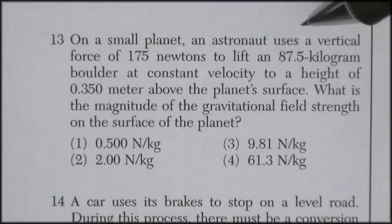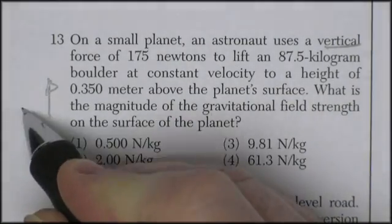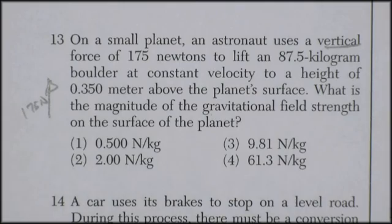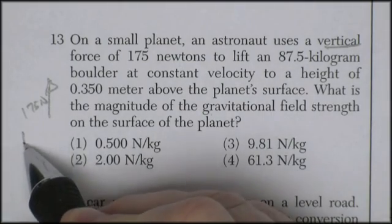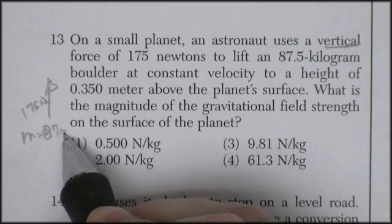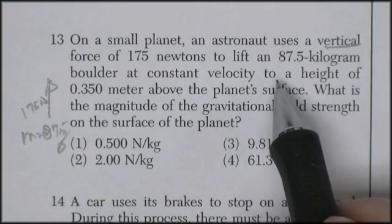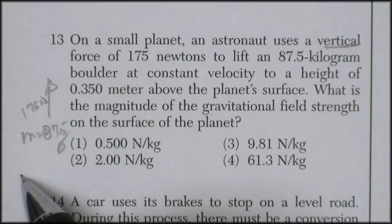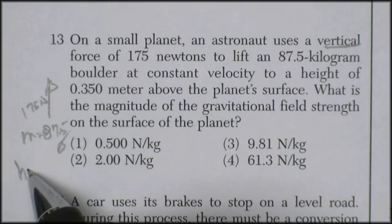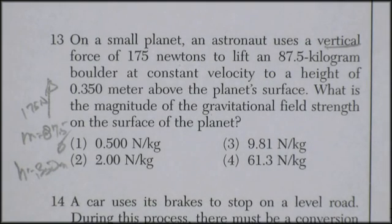Question 13. On a small planet, an astronaut uses a vertical force, a vertical that's up and down, 175 newtons, to lift a 87.5 kilogram boulder. Mass is 87.5 kilograms at a constant velocity to a height of 0.350 meters.